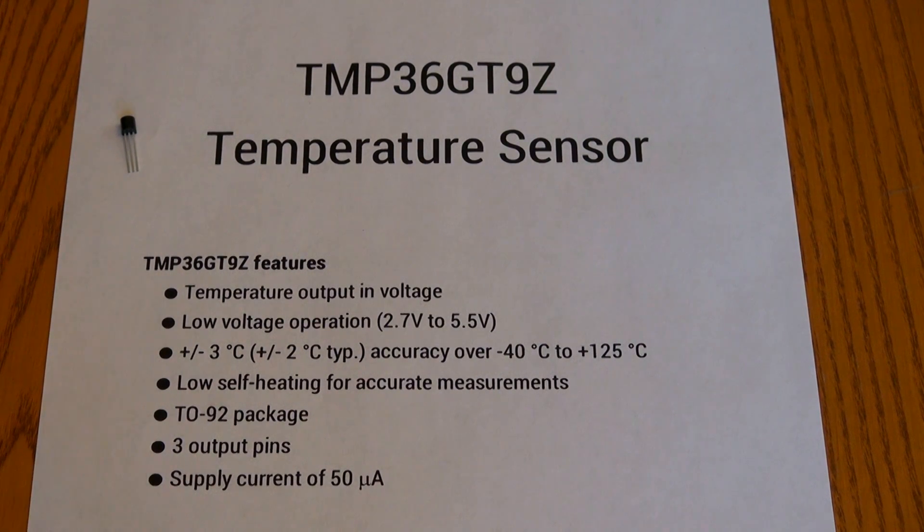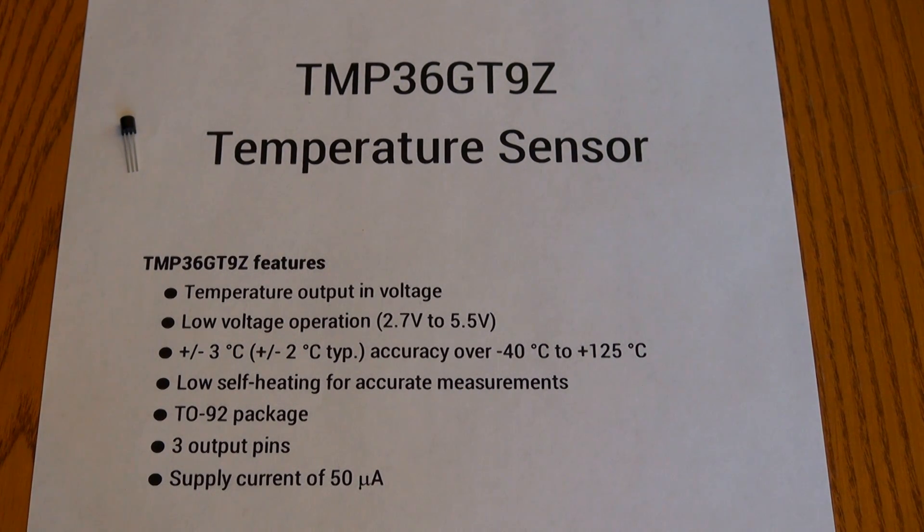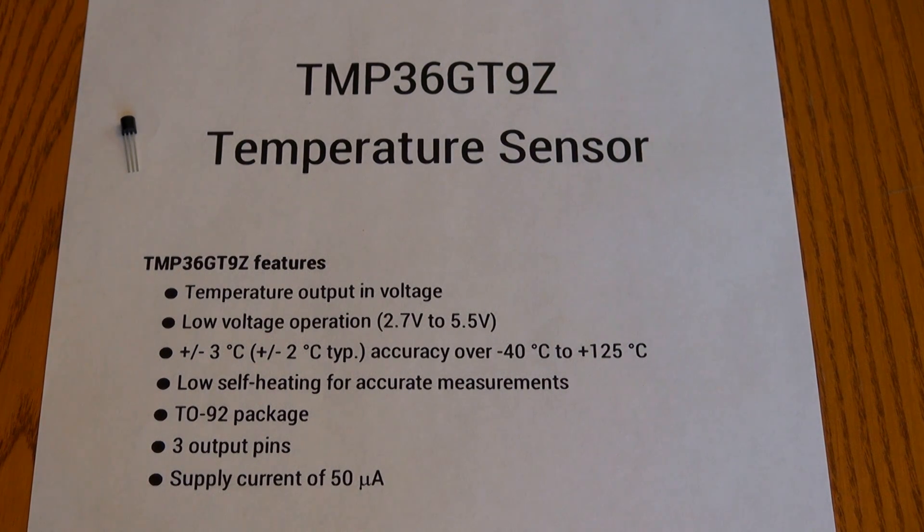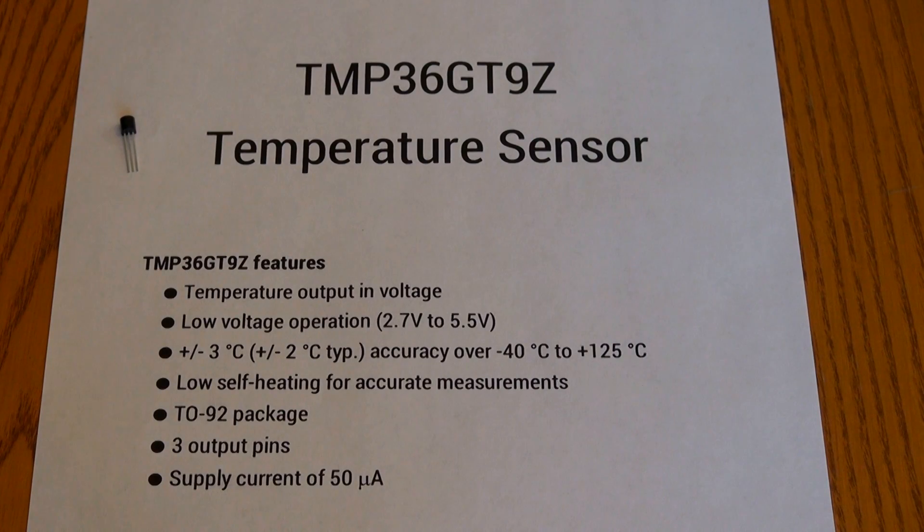Also, it has a supply current of 50 microamps, which is perfect for anyone who's trying to power the temperature sensor with a limited amount of power. So let's say you're running your Raspberry Pi off of a battery and you want to extend the life of that battery for as long as you can, you're going to want to use a temperature sensor like this because it has such a small supply current.